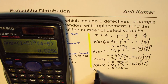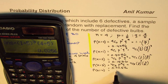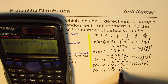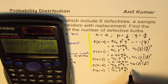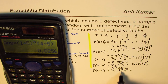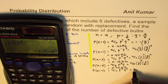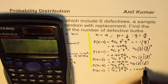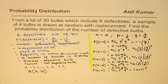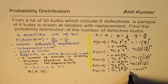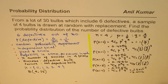Lastly, the probability for X equals 4 will be 4C4 × P^4 × Q^0, which is 1 × (1/5)^4, and that is equal to, in decimals, 0.0016.